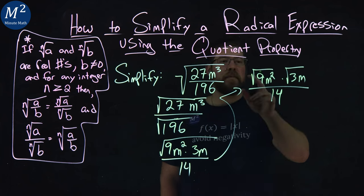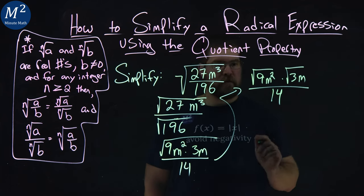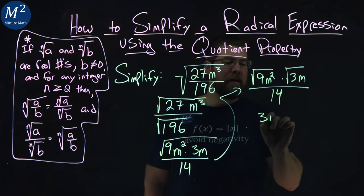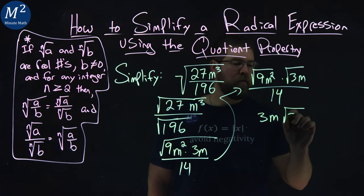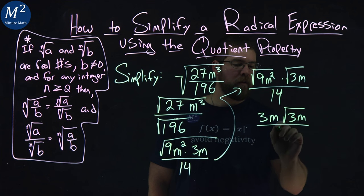From here, being 9 a perfect square and m squared a perfect square, we have 3m left over in the numerator times the square root of 3m over 14.